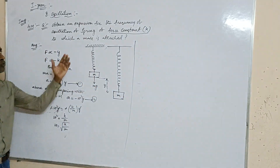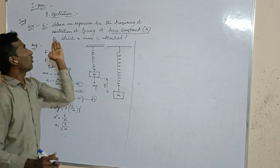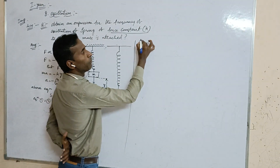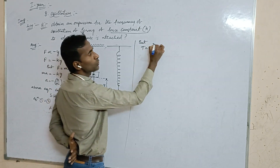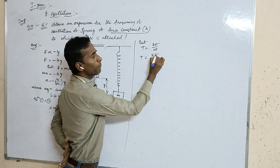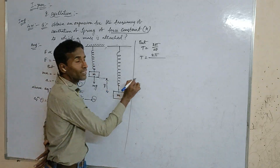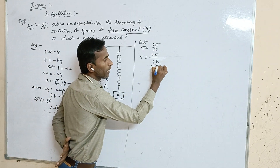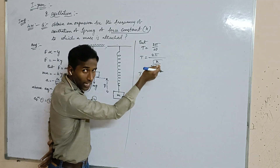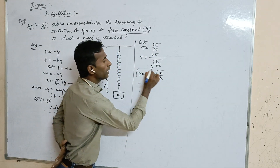We need to find the frequency of oscillation. First, let us find the time period. The time period T equals 2 pi over omega. Substituting omega equals square root of k over m, we get T equals 2 pi times the square root of m over k. This is the time period formula.